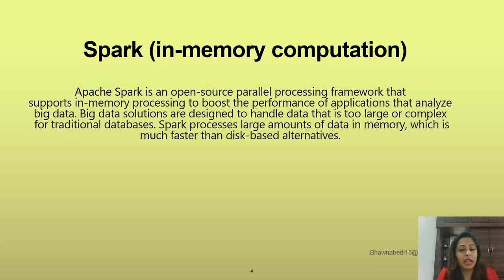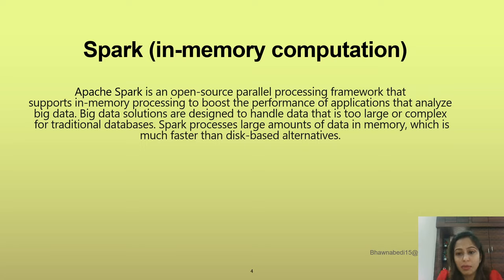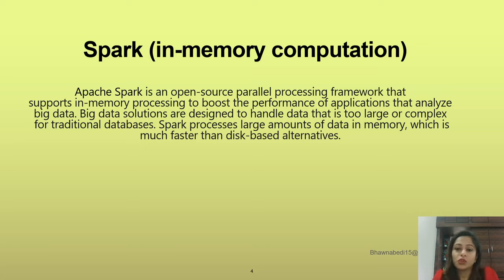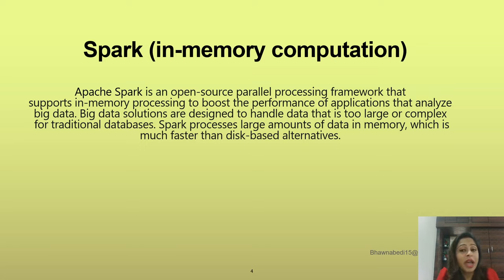Coming on to Spark — I'll go back one step to talk about Spark. As already explained, Spark is an in-memory computation. Let us go through a formal definition. Apache Spark is an open source parallel processing framework. When I say open source parallel processing framework — it is open source, available to all. You can do parallel processing, similar to MapReduce, but with in-memory computation. Since it is splitting data into multiple in-memory machines, it is able to perform parallel processing.